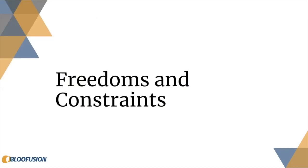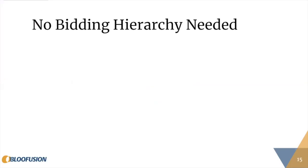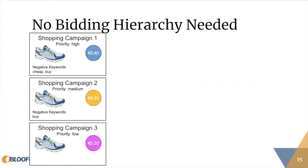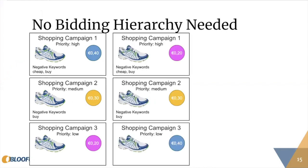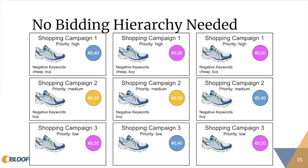There are some things you don't have to worry about and some things you do. Starting with the freedoms: you don't need any bidding hierarchy. You can have high bids in a medium-priority campaign and low bids in a high-priority campaign, or mix it up however you like. You're completely free to do your bidding inside these campaigns without looking at other campaigns.